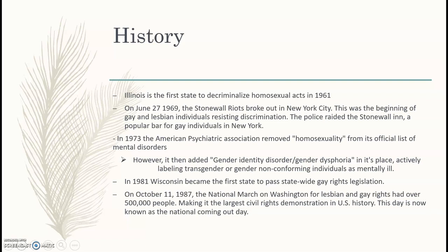On October 11, 1987, the National March on Washington for Lesbian and Gay Rights had over 500,000 people, making it the largest civil rights demonstration in U.S. history. This day is now known as National Coming Out Day.